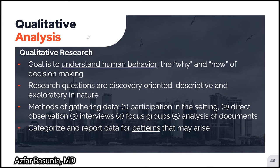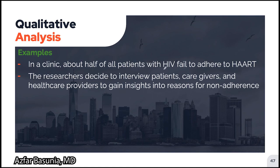In our last section, we will discuss qualitative analysis. The goal of qualitative research is to understand human behavior — the why and how of human decision making. The research questions are primarily discovery-oriented, descriptive, and exploratory in nature. Methods of gathering data include participation in the setting, direct observation, interviews, focus groups, or analysis of documents. After data is collected, it is categorized and reported to look for patterns. For example, if about half the patients with HIV at a clinic fail to adhere to antiretroviral therapy, researchers may interview patients, caregivers, and healthcare providers to gain insights into the reasons for non-adherence.